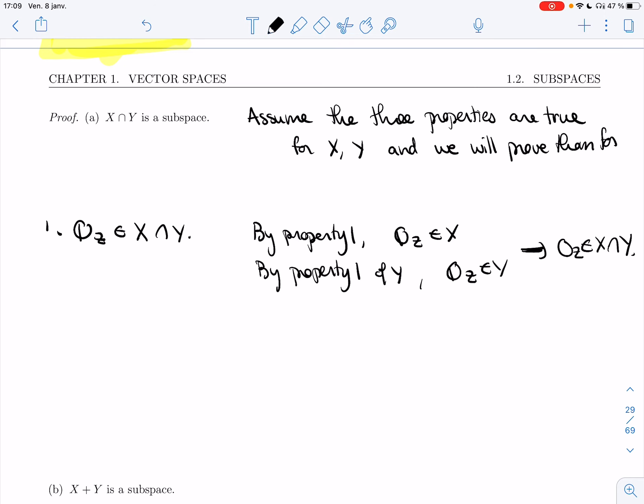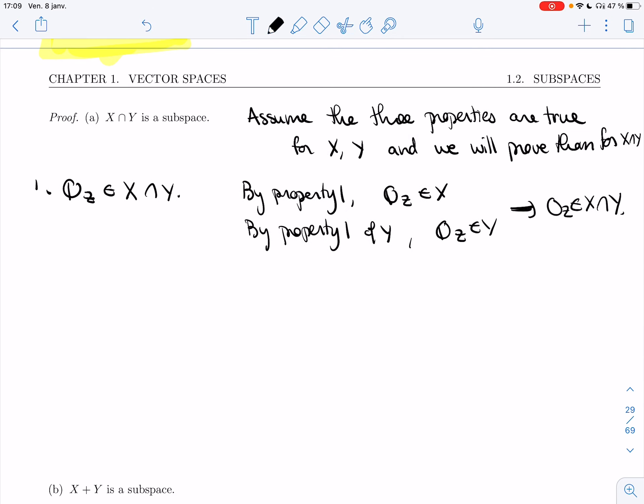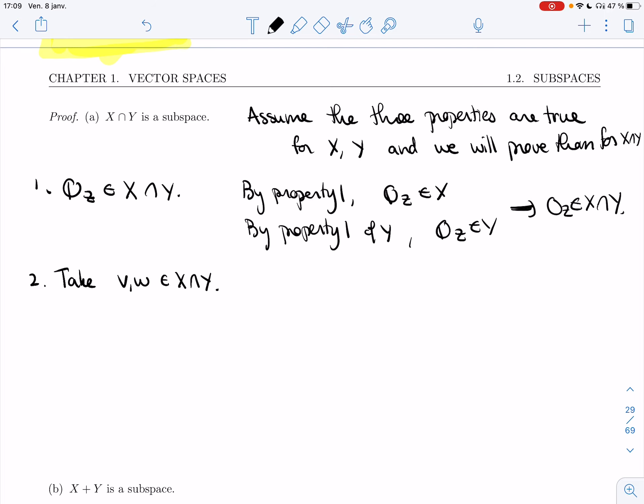And so zero_Z is in X intersection Y. Let me just put this here. I've been running low on space lately, and I want to make sure that I don't make the same mistake here. Second, I need to take two elements in X intersection Y. I need to show that their sum is also in the intersection.